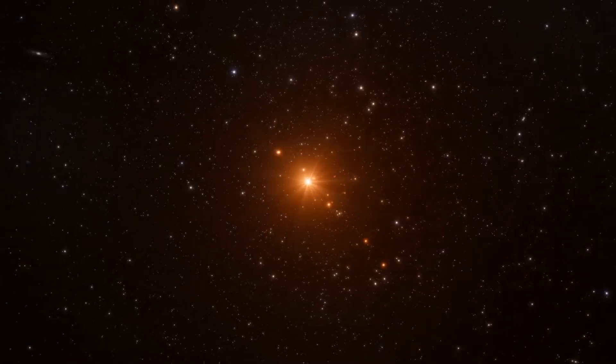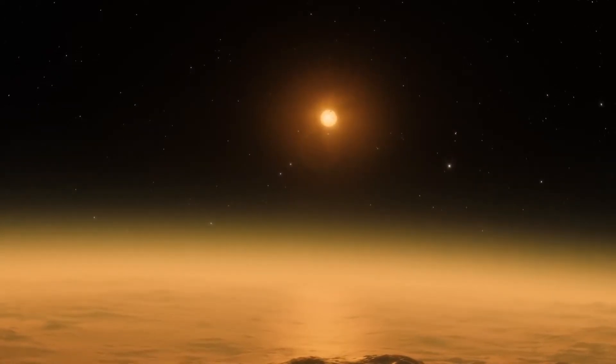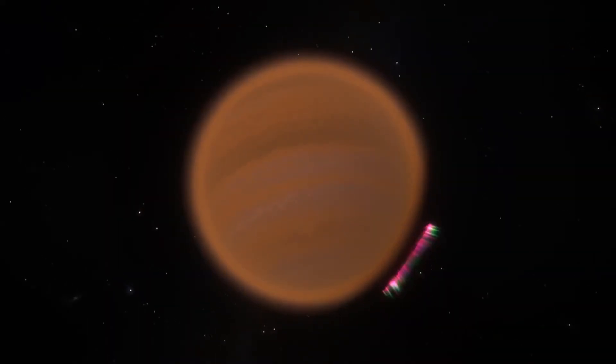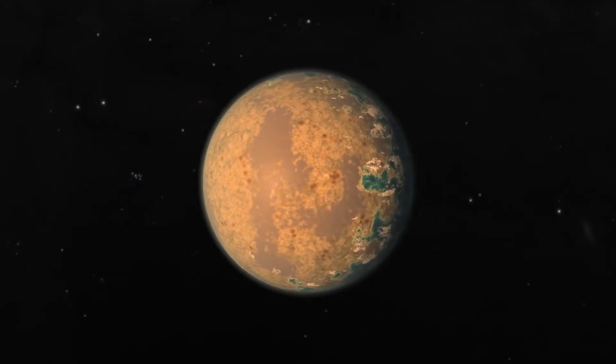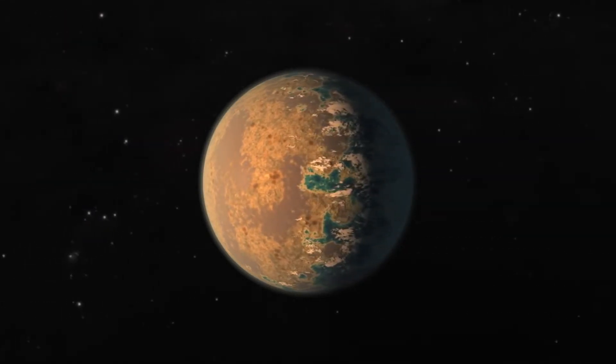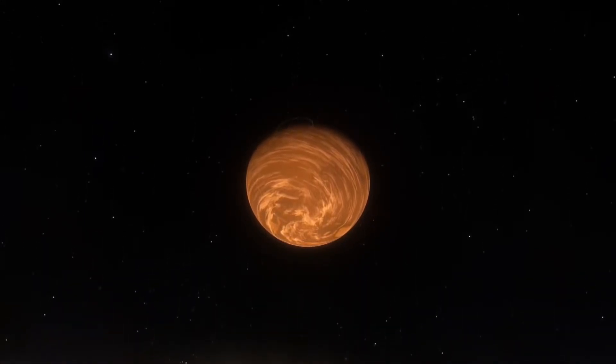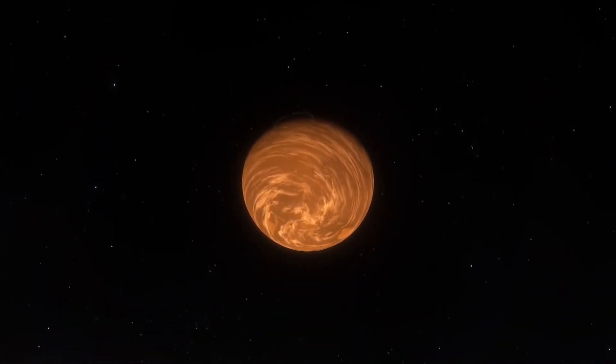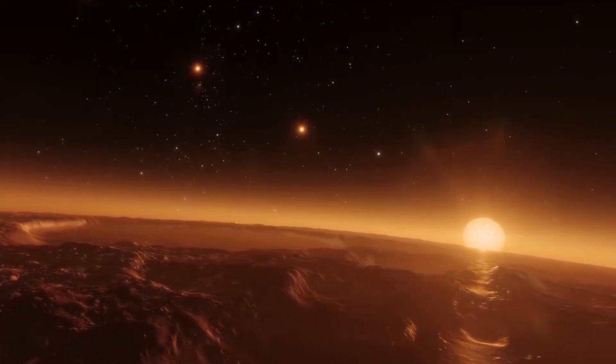It lies in the habitable zone at a proper distance for temperatures that could support liquid water. The planet circles its star from approximately 0.028 AU. This proximity could result in tidal forces affecting the planet, leading to considerable geological activity. They could also affect the liquid water potential.